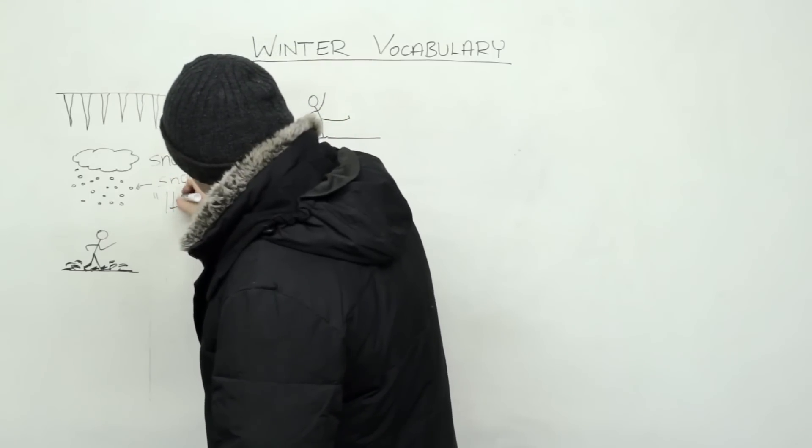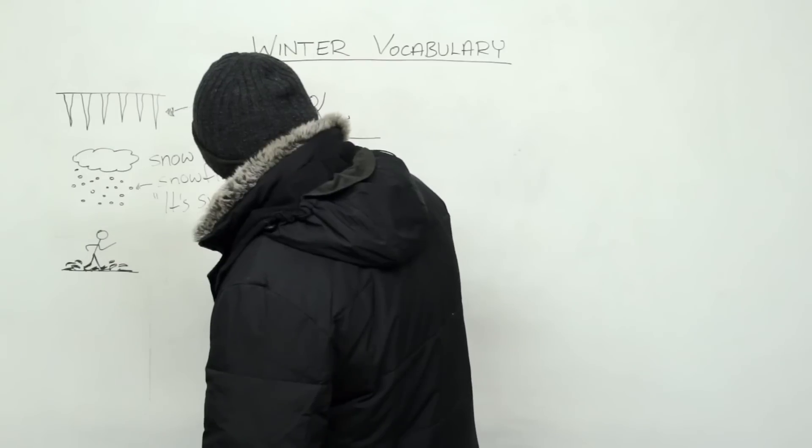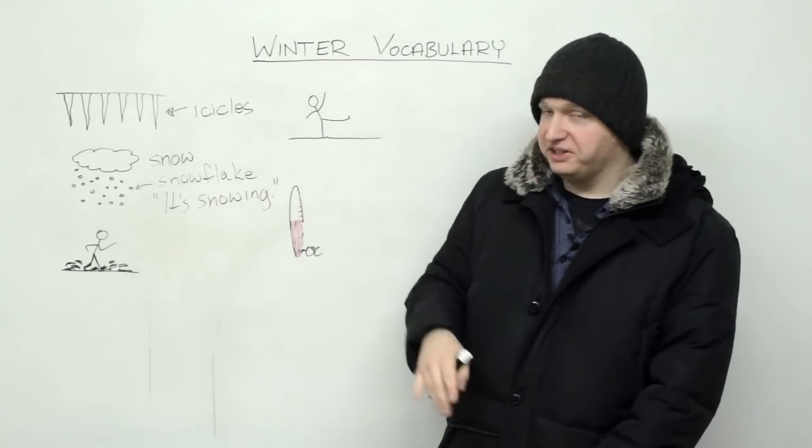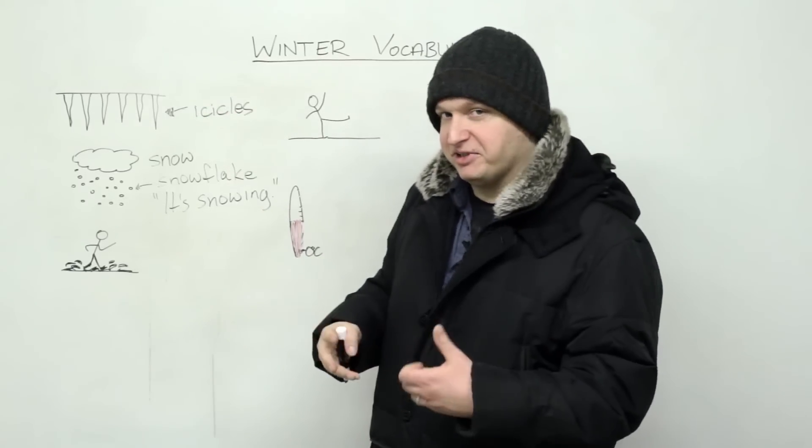So in the winter, it snows a lot. And if you look outside, you can use the verb and you see snow falling, you can say, it's snowing. Okay, just like raining, but snowing.